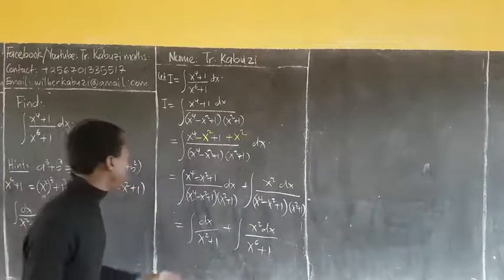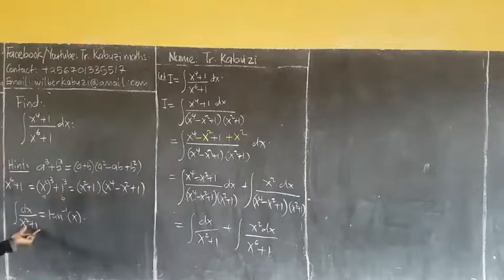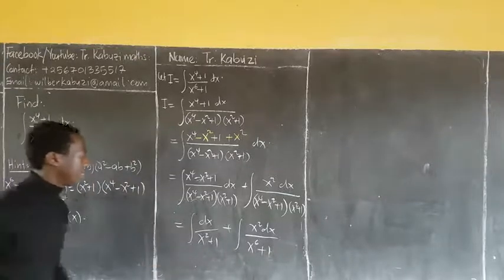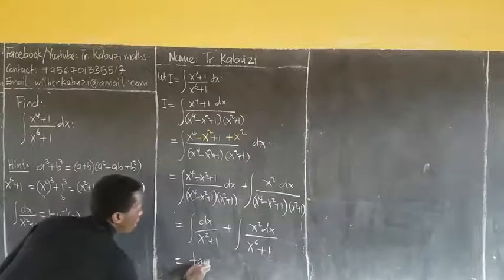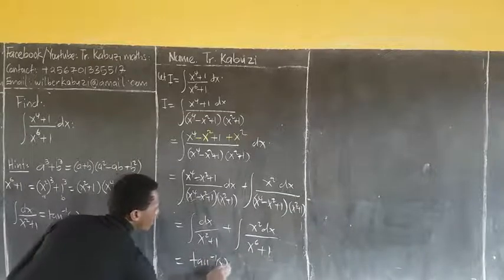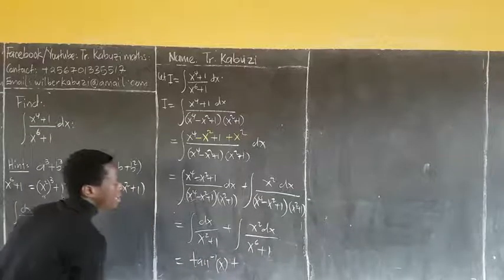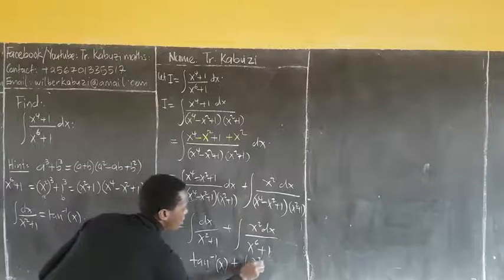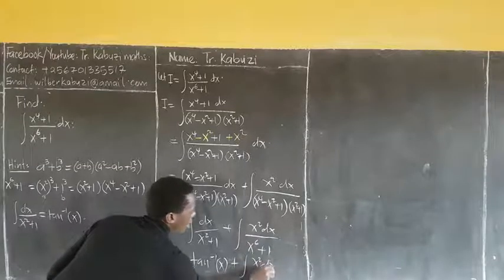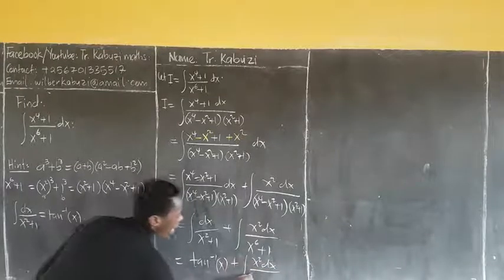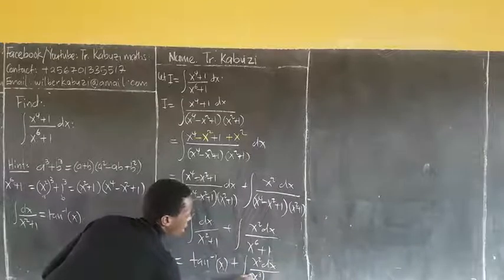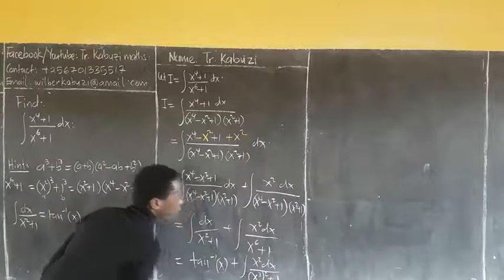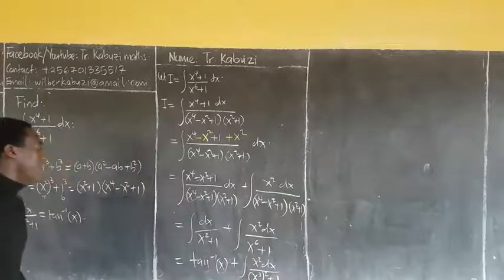From there, integrating this first part: the integral gives arctan(x), plus. The second integral has x² dx over — writing the denominator as (x³)² + 1.